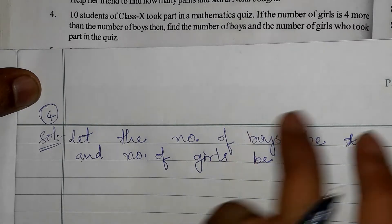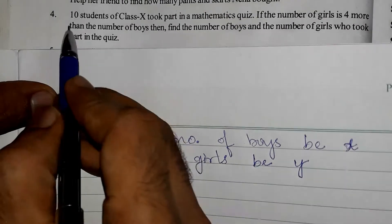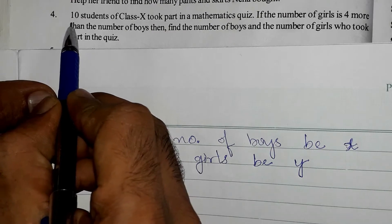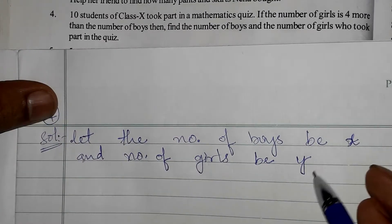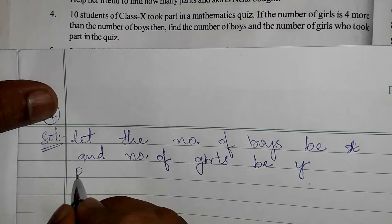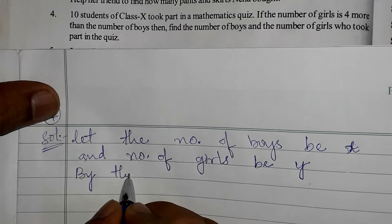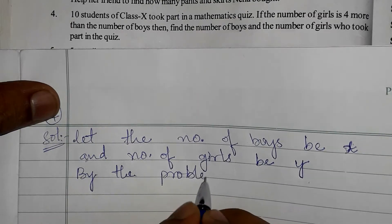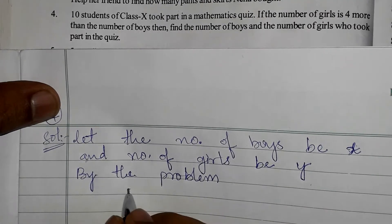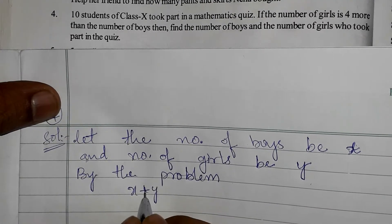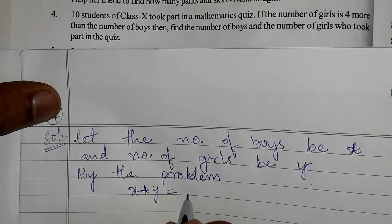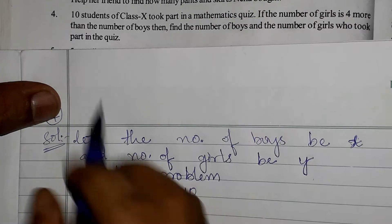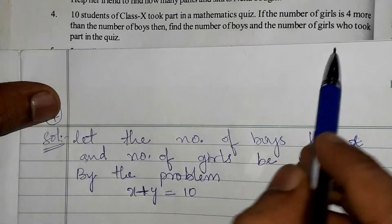So by the problem we get x plus y equals 10. So 10 students are there. Next, number of girls - so what we have taken, girls y - so number of girls is equals to four more, four more means plus four.